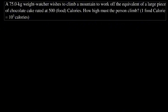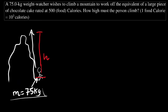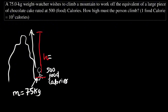Next question: a 75 kilogram person wishes to climb a mountain to work off the equivalent of a large piece of chocolate cake rated at 500 food calories. How high must the person climb? One food calorie equals 10³ calories. We need to find the height of the mountain.